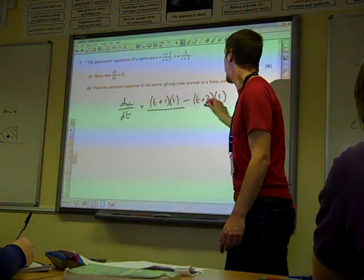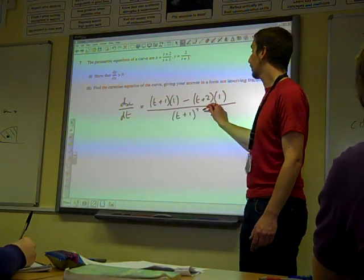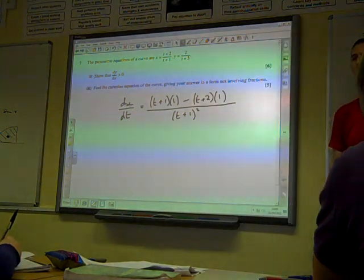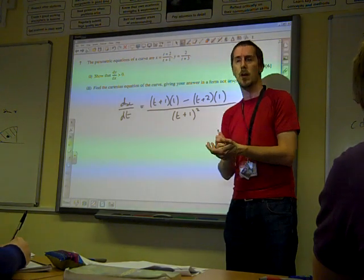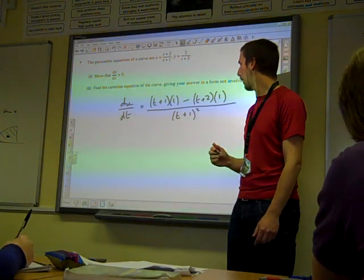All divided by v squared. And I'm assuming that from the core three days we remember how the quotient rule works and how to apply it.